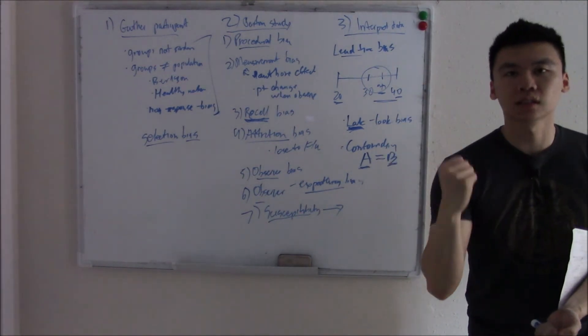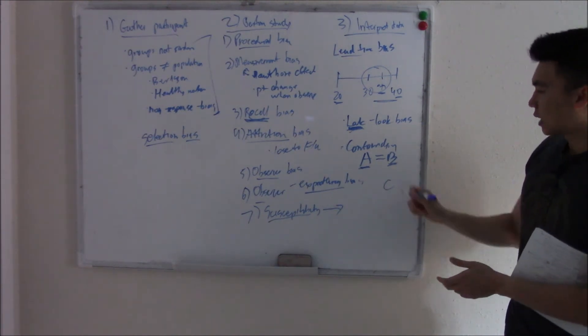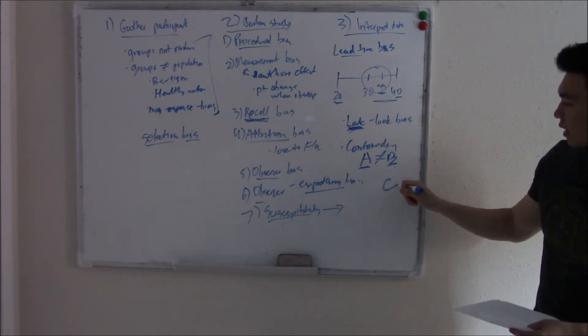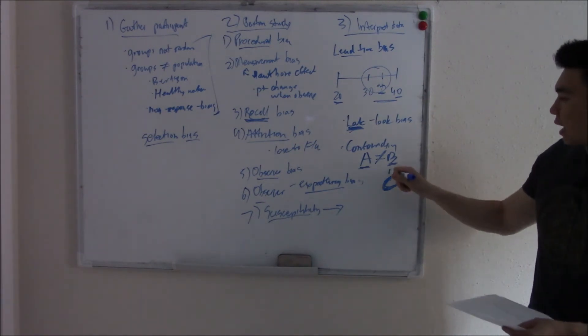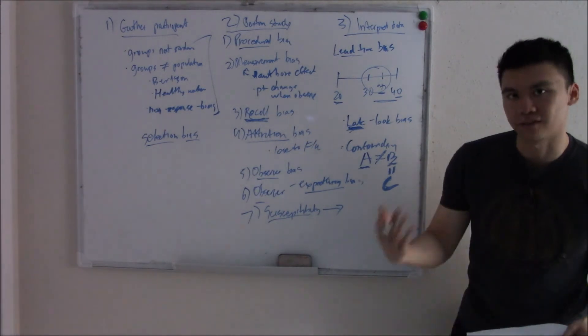And sometimes our research shows this and we're like, oh yes, we found the link. Not knowing that A does not equal B. In fact, there's some sort of outside factor that we didn't attribute, that we didn't discover. And that is actually equal to it. That is the actual factor that we didn't find.